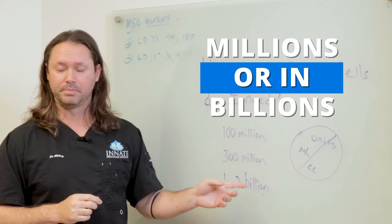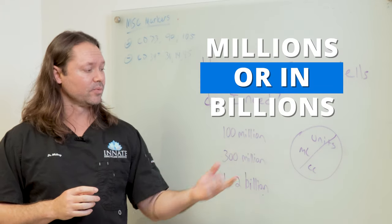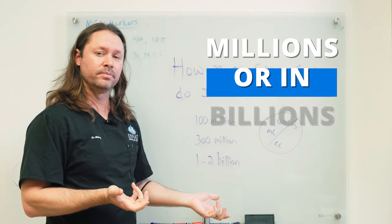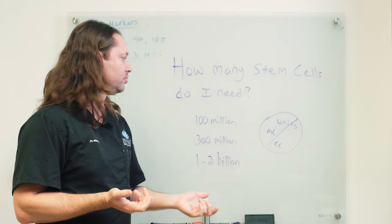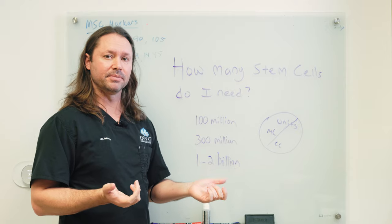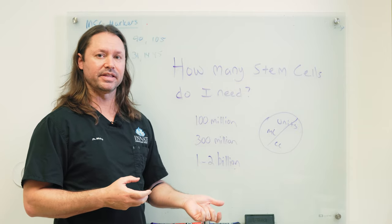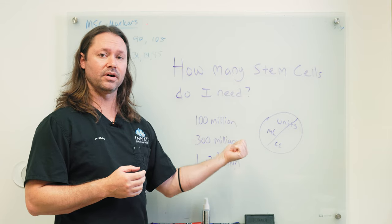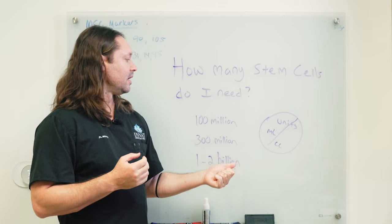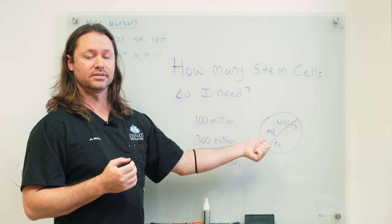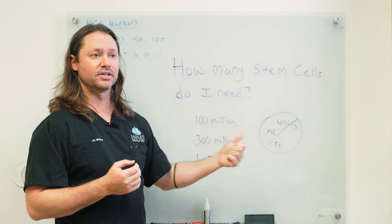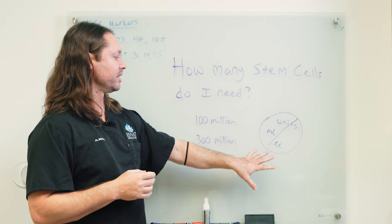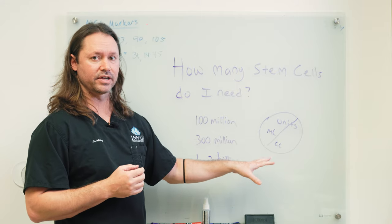The volume is another one. You can measure it in a volume. I can say I'm giving you 5 milliliters of stem cells, but how many stem cells are in that 5 milliliters? I can put 100 million in. If you go watch our video on stem cell preparation, I can put 100 million, I can put 300 million cells into 5 milliliters.